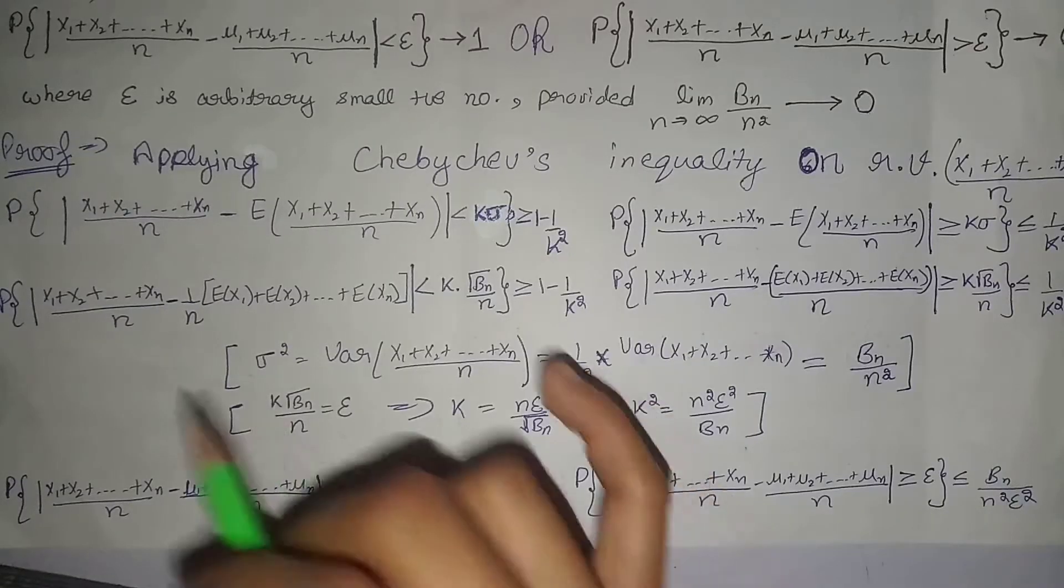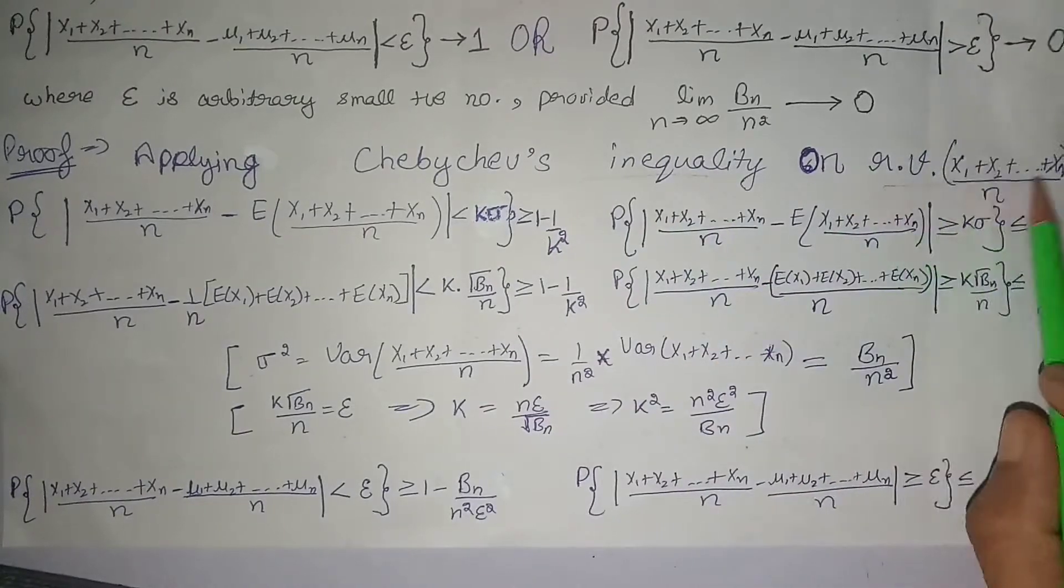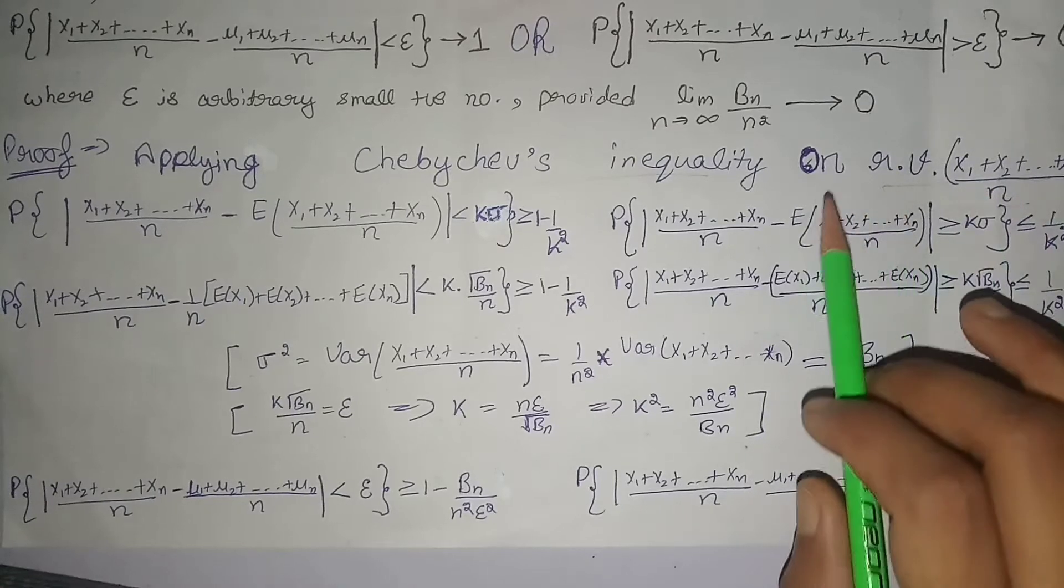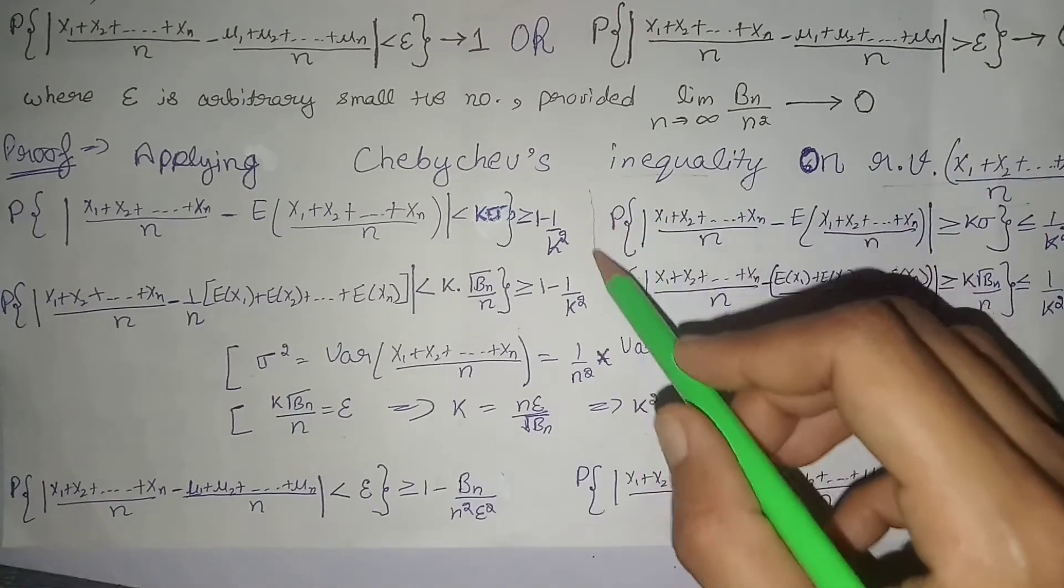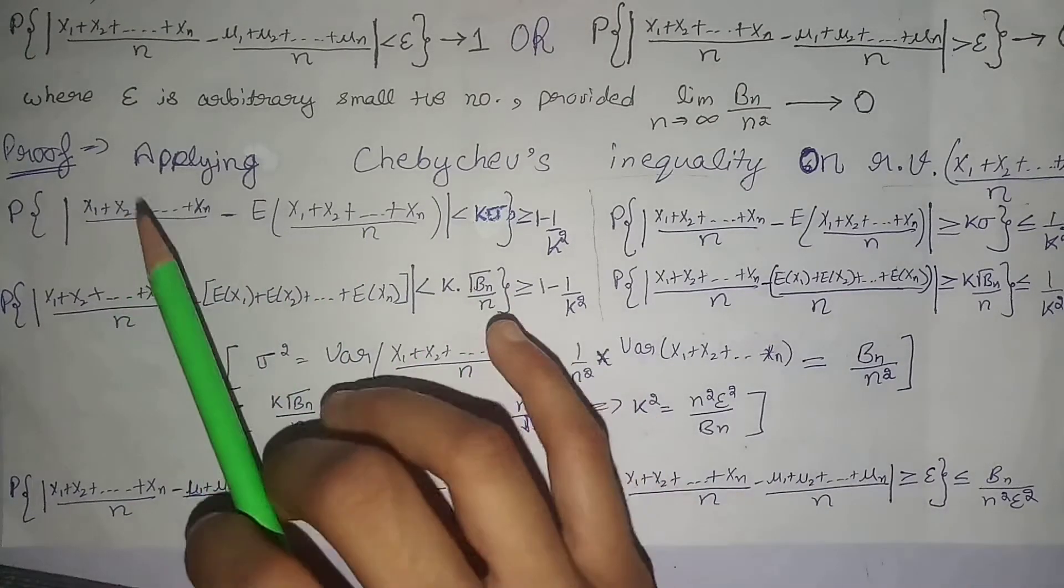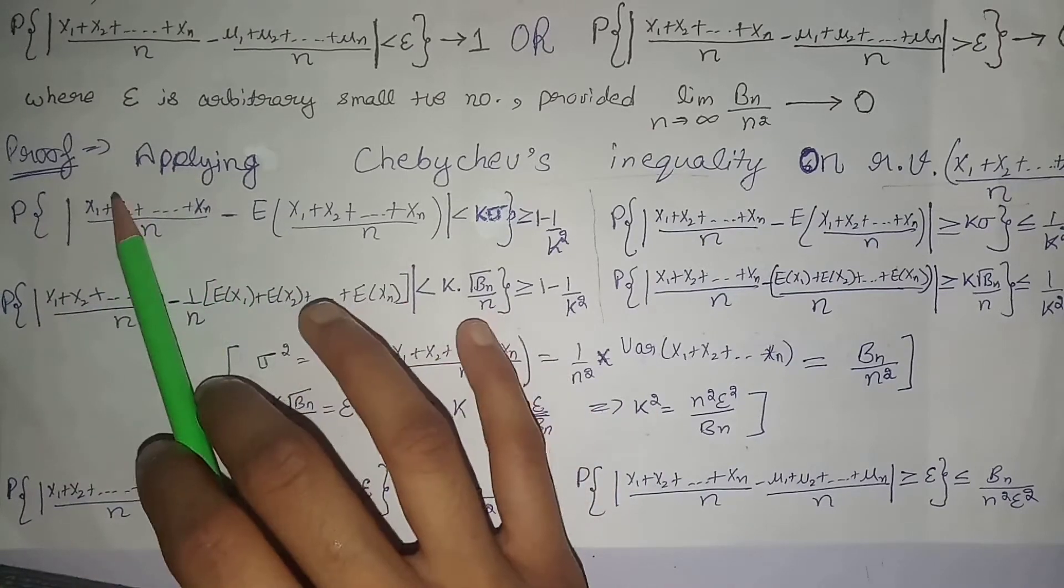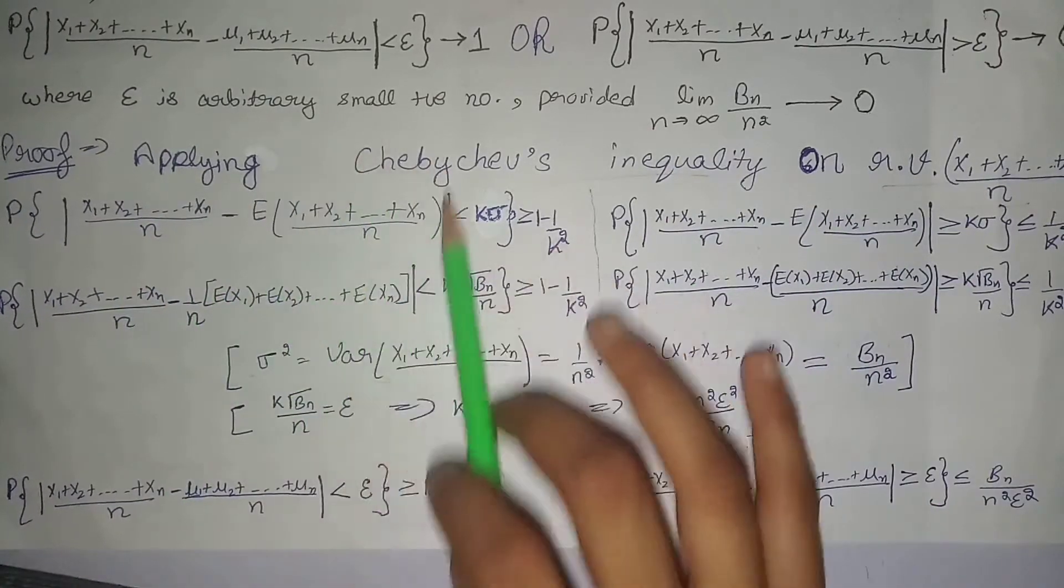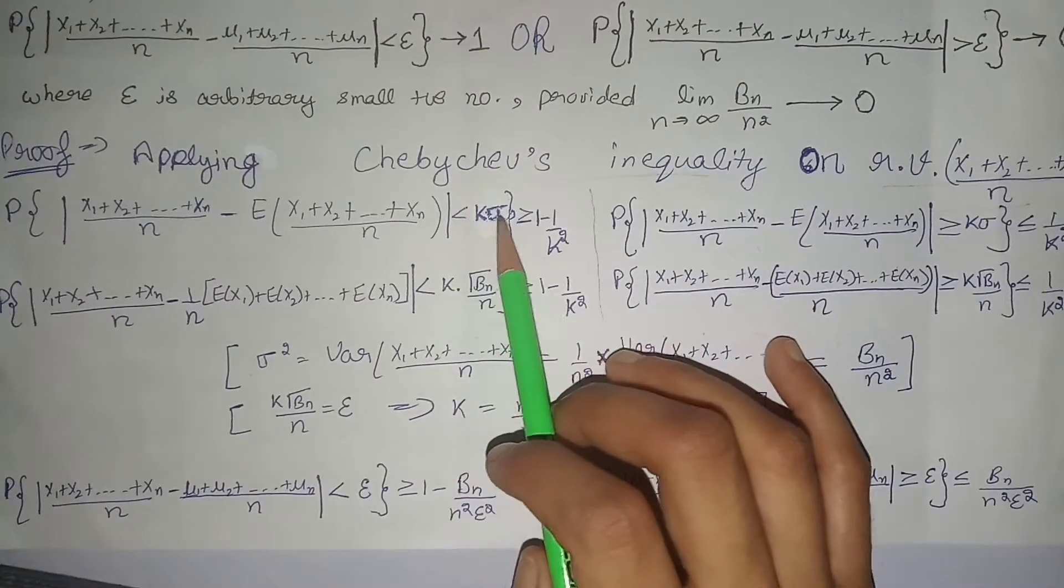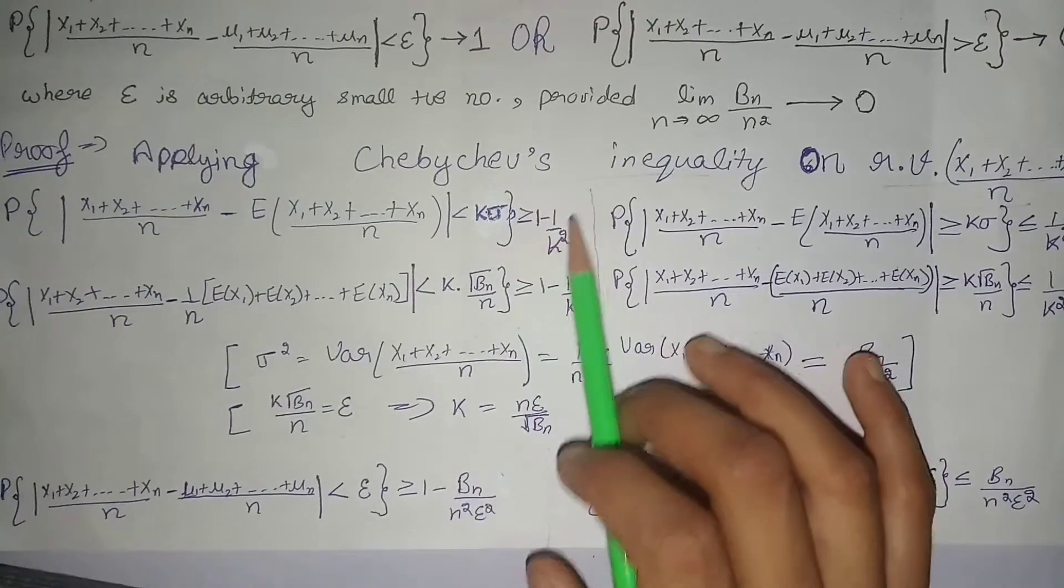So let's start the proof. First of all, we apply Chebyshev's inequality on this random variable, that is x1 plus x2 up to xn divided by n. The first statement of Chebyshev's inequality is probability of random variable minus expectation of that random variable in modulus, less than k sigma, and this whole probability is greater than or equal to 1 minus 1 divided by k square.